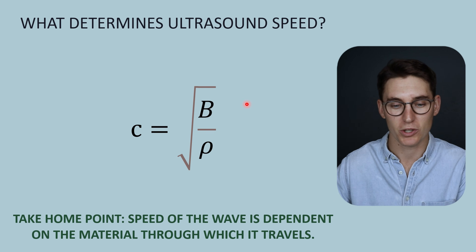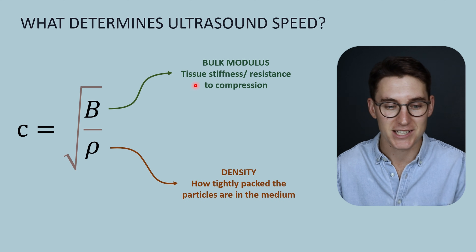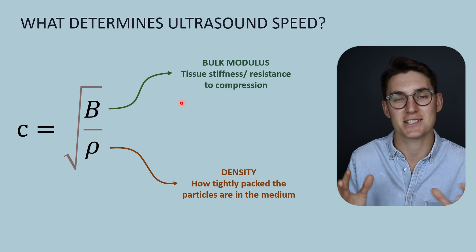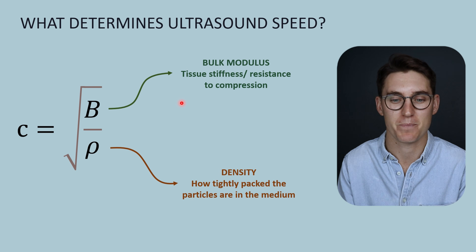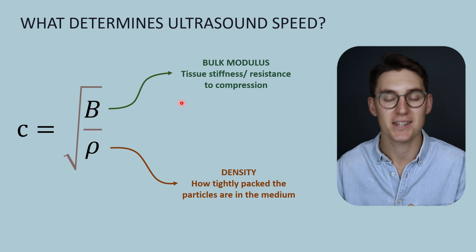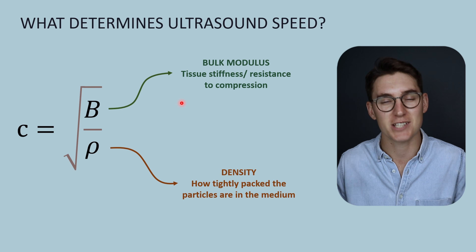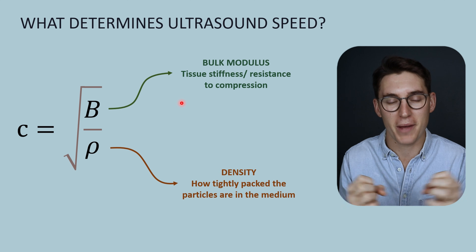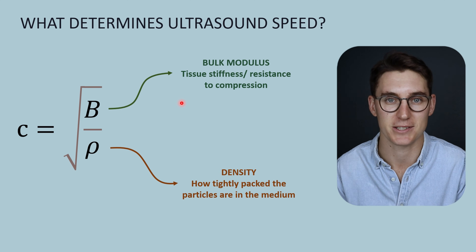The elastic property is known as the bulk modulus and the inertial property as the density of the material. The bulk modulus is the tissue stiffness — the resistance that tissue has to compression and how readily the units return to their resting place. The stiffer the tissue, the less compressible, the higher the bulk modulus, the faster sound travels. The density is how tightly packed the particles are; the tighter they are packed, the slower sound will go and the more inertia that tissue has.